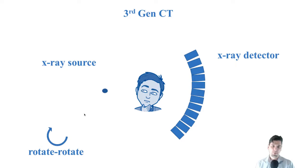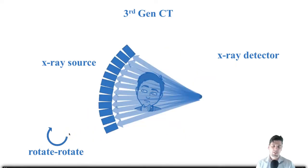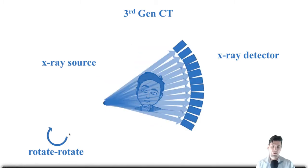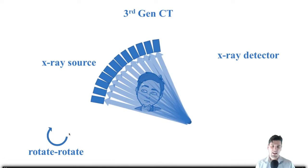So this is what's really nice about the third-gen CT, there's no translation necessary anymore. Now it's just rotation, so rotation of both the x-ray source and the x-ray detector.